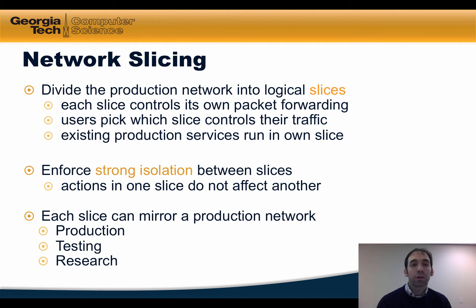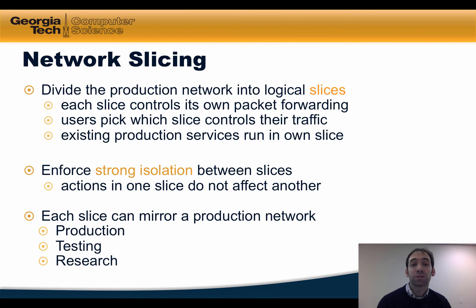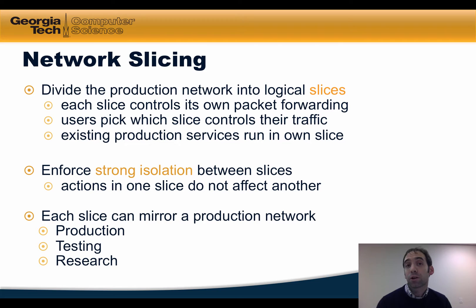In short, network slicing divides the production network into logical slices so that each slice controls its own packet forwarding. Users or applications might be able to pick which slices control their network traffic. Additionally, existing production services can run in their own slice or slices that are separate from slices that might be used for testing or experimentation.